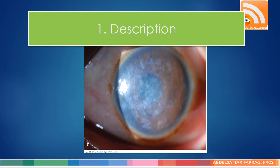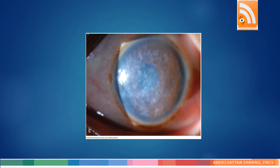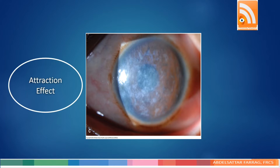When I ask the candidate to describe a photo, or if it is a case in an anterior segment station, the majority of candidates start by saying 'white opacities in the cornea, most probably macular corneal dystrophy.' This description shows two pitfalls. The first pitfall is what I call the attraction effect — you start by commenting on the most obvious pathology in a non-organized manner.